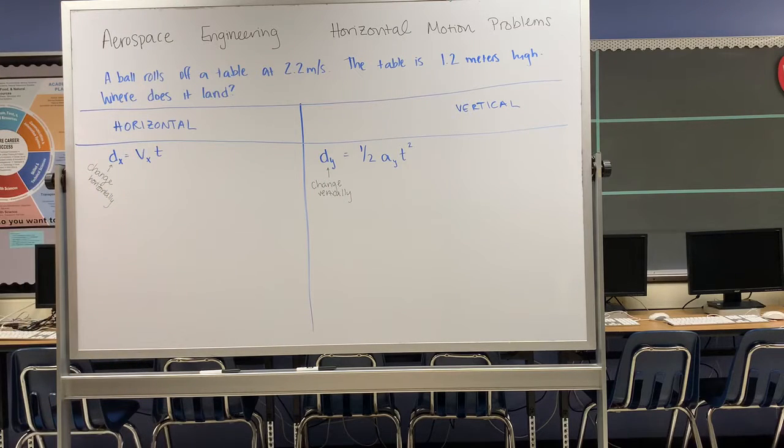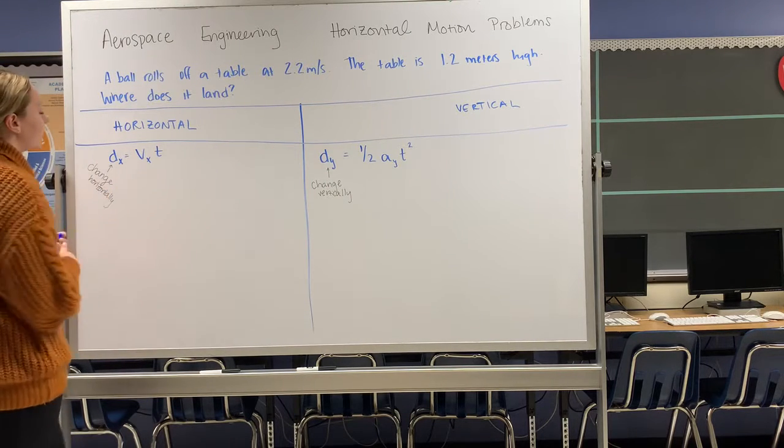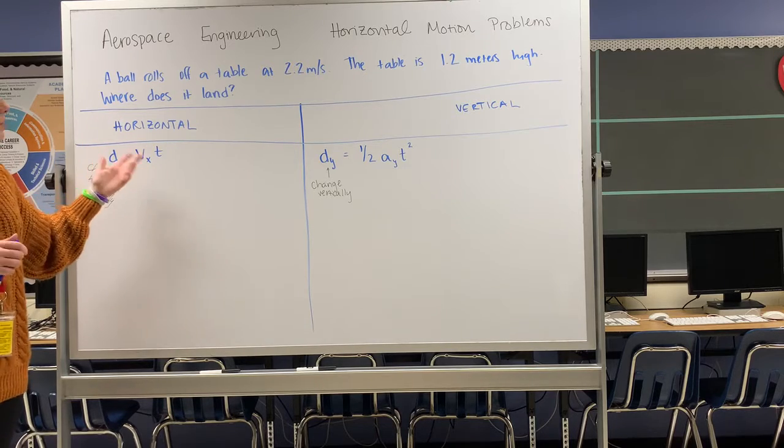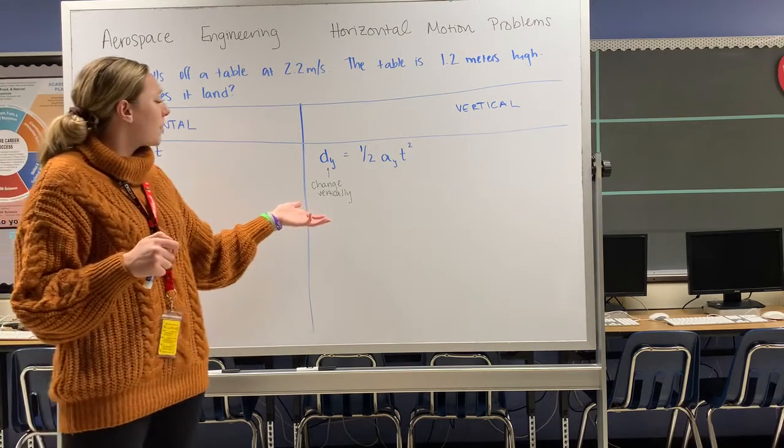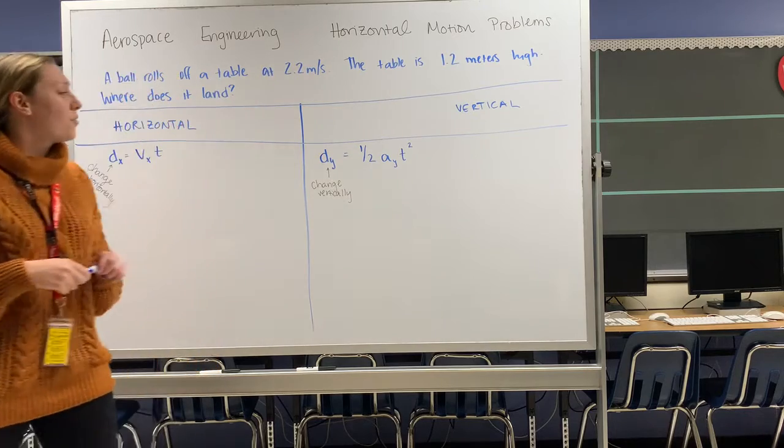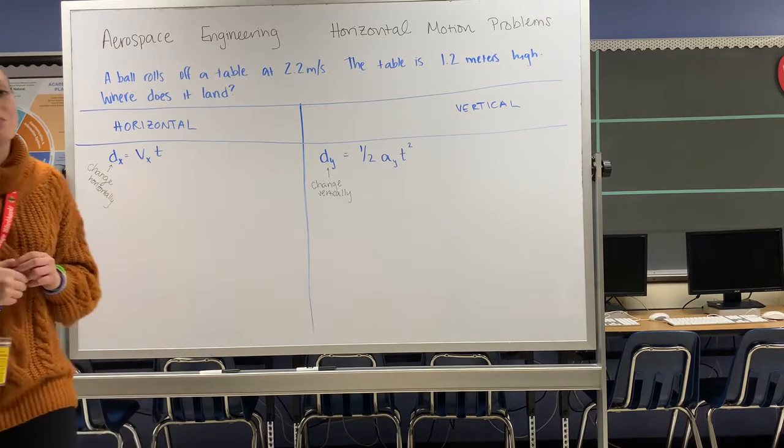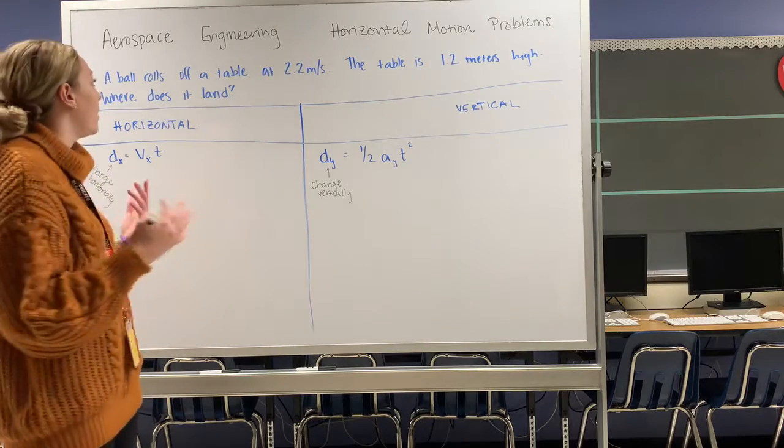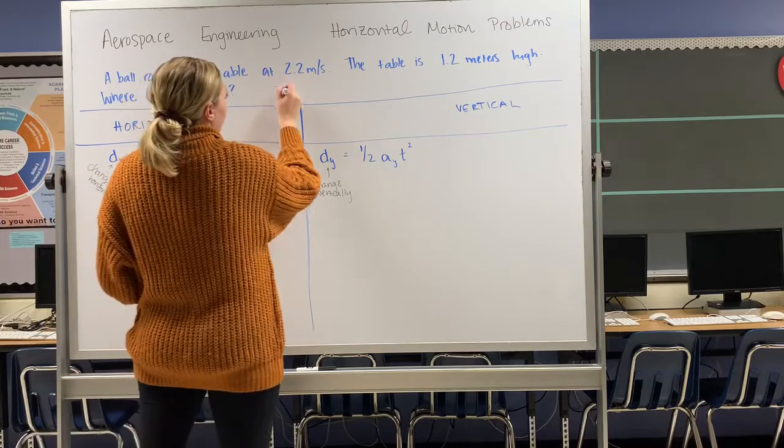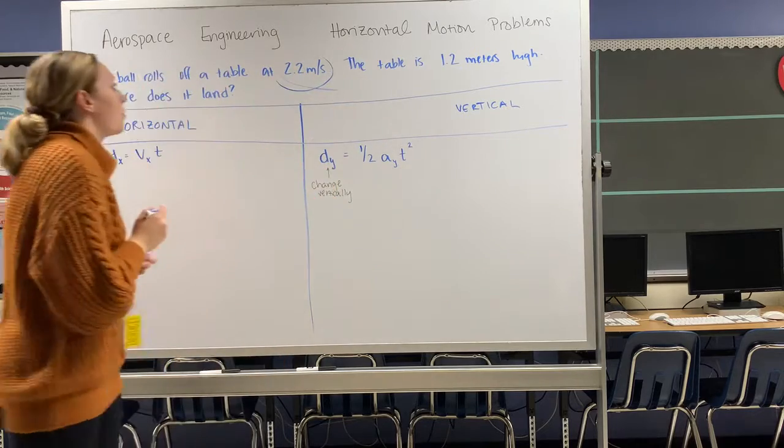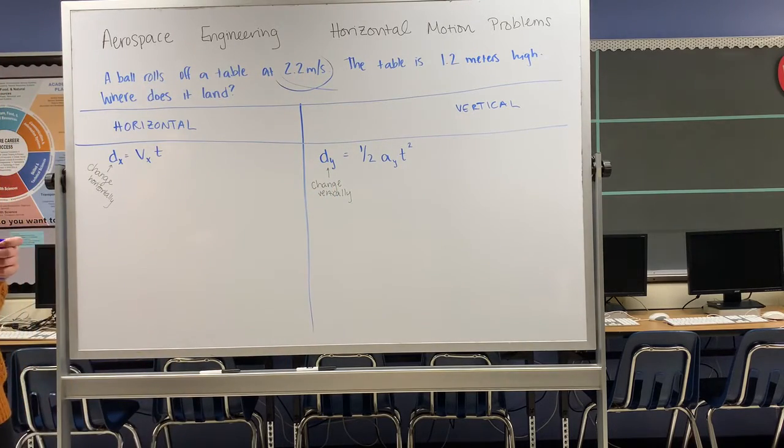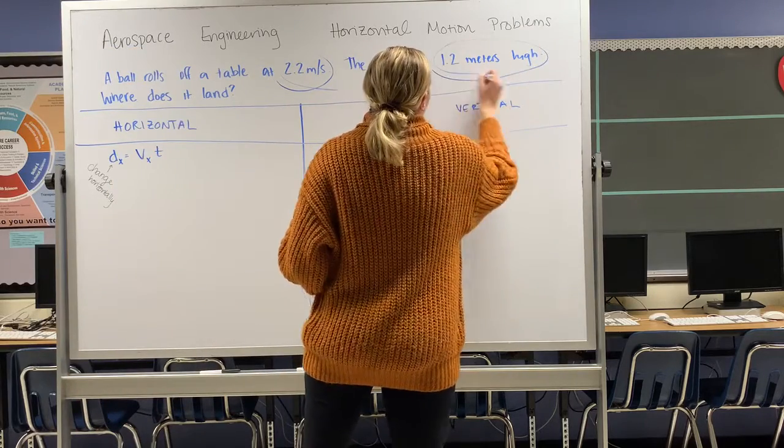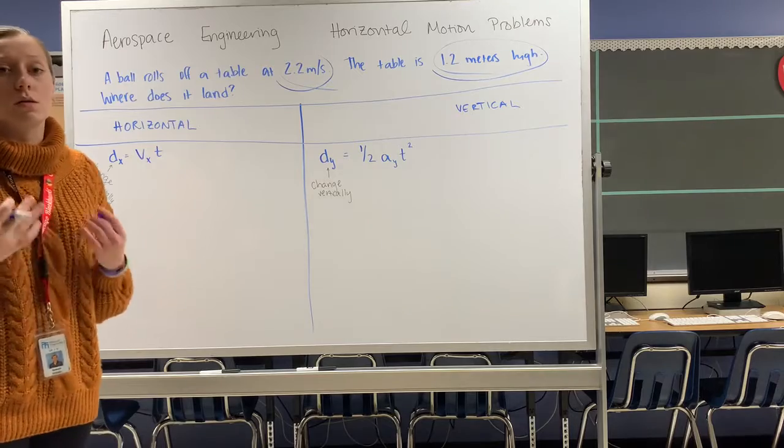My two equations are given. I know that my change horizontally is equal to my velocity times time, and I know that my change vertically is equal to one-half acceleration due to gravity times time squared. I'm going to plug in what I know. I'm given that I'm rolling off the table at 2.2 meters per second and the table is 1.2 meters high.